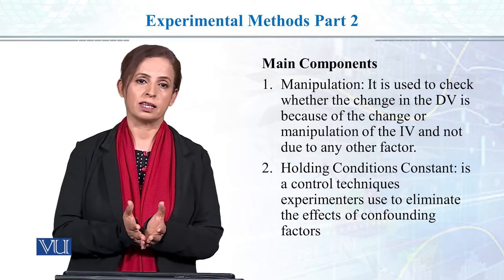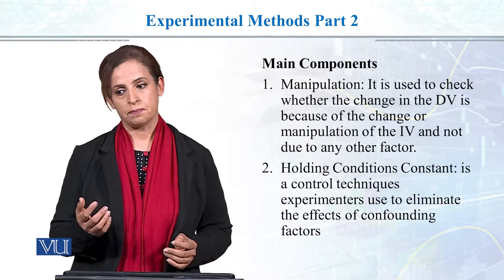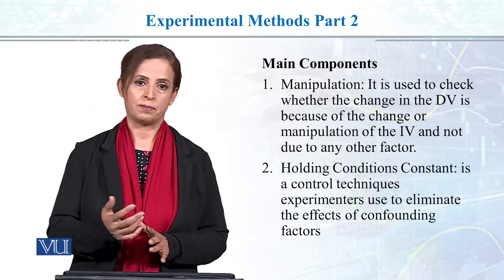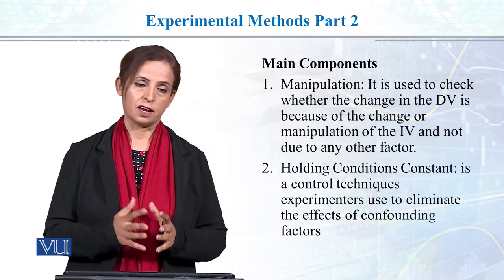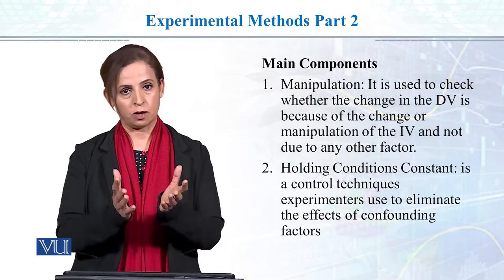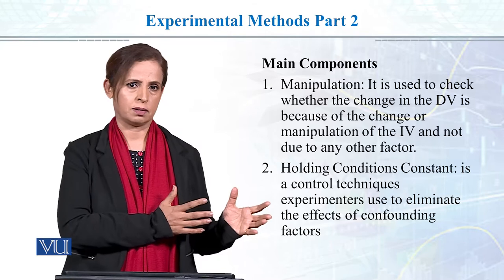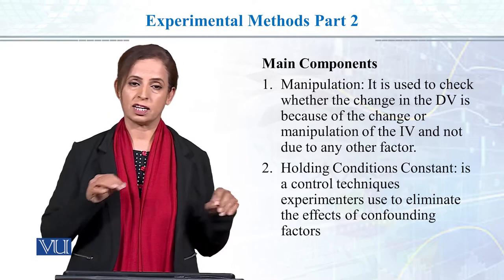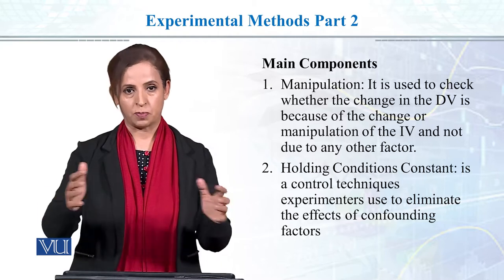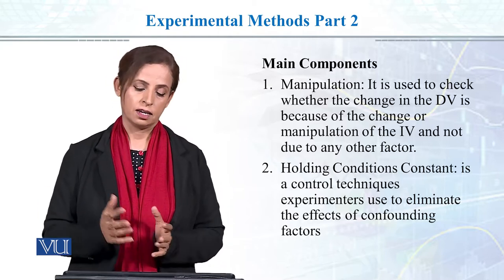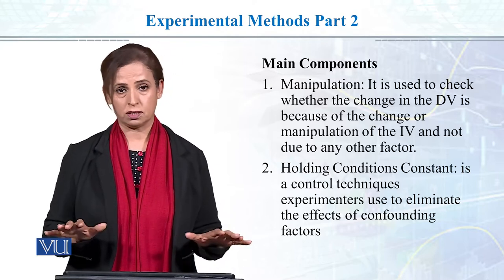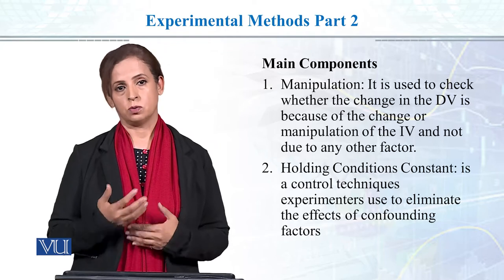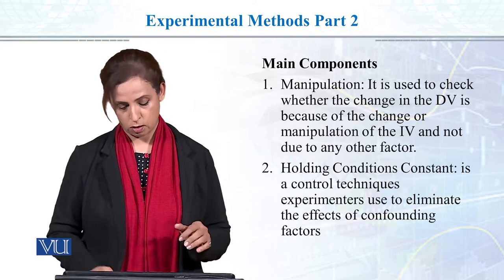For example, if one group has an early morning lecture and the other group meets at 3 o'clock, or one group is in a very cold room and the other in a very warm room — those differences can become extraneous variables. I have talked about four types of extraneous variables, whether they come from the experimenter, participant, experiment itself, or outer environment. You have to hold the conditions constant: my instructions will be the same, my material will be the same, my topic will be the same, so that I can establish a cause-and-effect relationship.